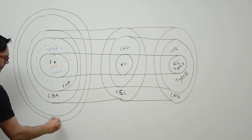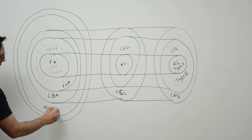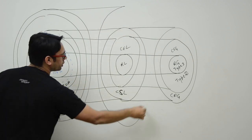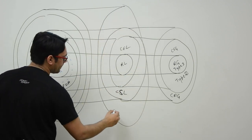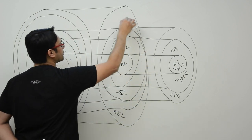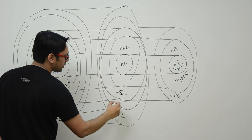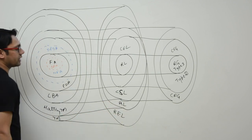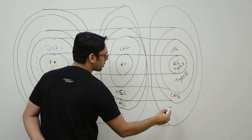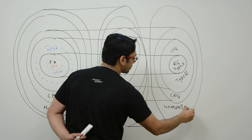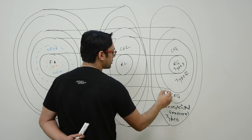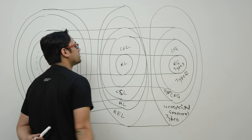Then we have the Turing machine. The halting Turing machine is a smaller set than the set of Turing machines. The languages accepted by Turing machines are called recursively enumerable languages, and the languages accepted by the halting Turing machine are called recursive languages. The grammars which generate these languages are called unrestricted grammars, also known as type 0 grammar. Context-sensitive is type 1, context-free is type 2, and regular is type 3.